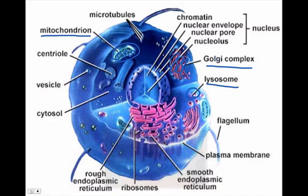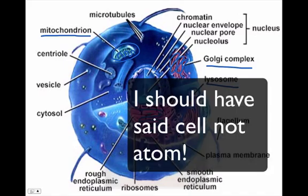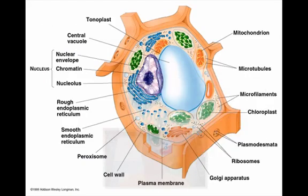The smooth ER would be here like this. Rough ER, which is just going to have ribosomes on it — little dots. The ribosome is represented as a dot. And then, of course, the nucleus of the cell. Hopefully you'll be able to identify these parts. And then if you look at a plant cell, there are a few differences.